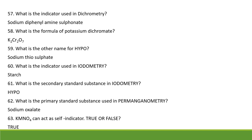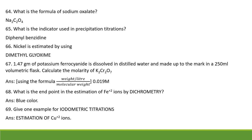Hypo is also called sodium thiosulfate. What is the indicator used in iodometric titrations? Starch. What is the secondary standard substance in iodometry? Hypo. What is the primary standard substance used in permanganometry? Sodium oxalate. KMnO4 can act as a self-indicator — true. What is the formula of sodium oxalate? Na2C2O4.